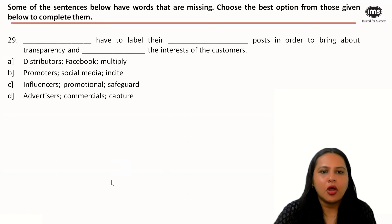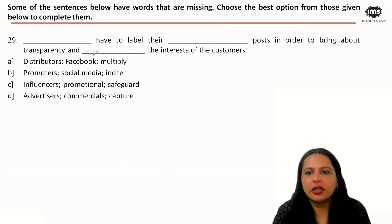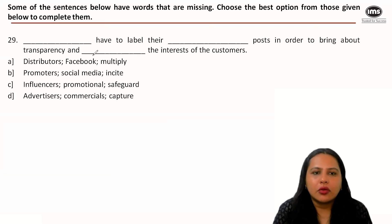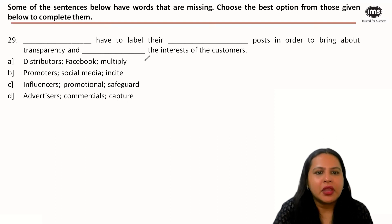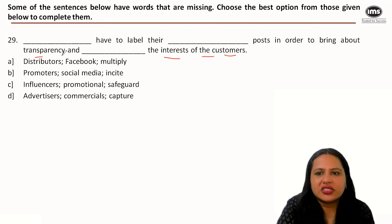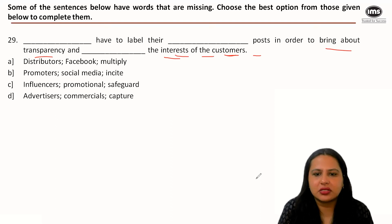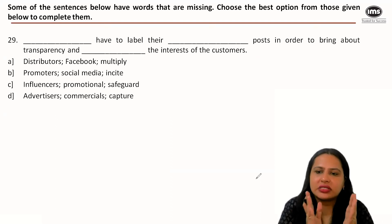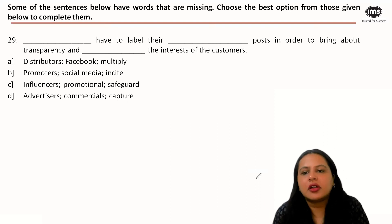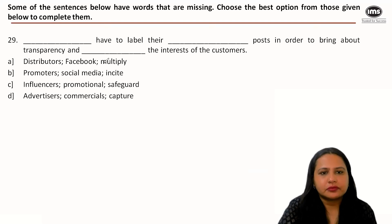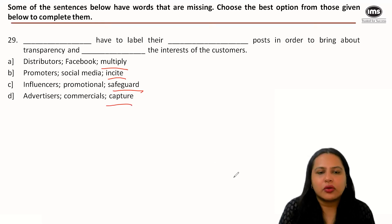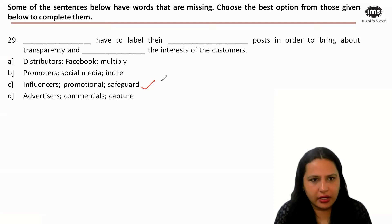It's not necessary to answer the blanks in a particular order — we can start with the one we feel is safest. The word transparency gives us a clue: why would someone bring about transparency? To protect the customer's interest. Looking at the options — multiply, incite, safeguard, or capture the interest — the right fit is clearly to safeguard the interest.